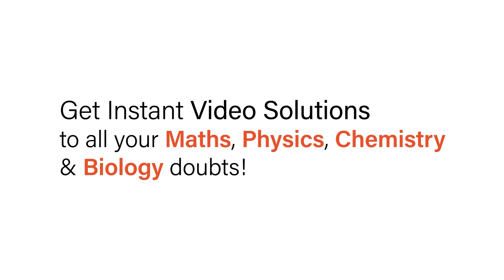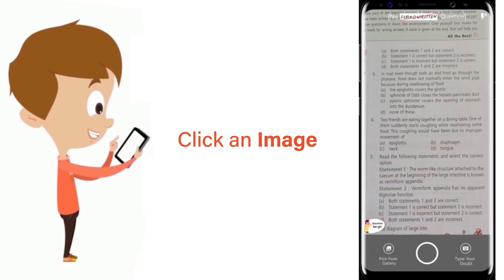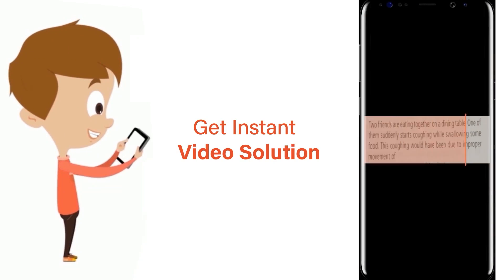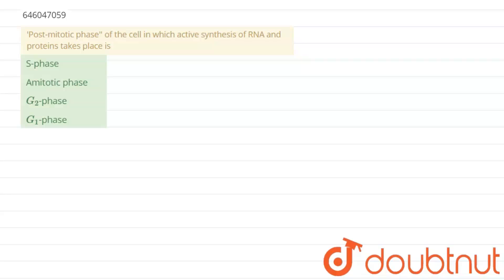With Doubtnet, get instant video solutions to all your math, physics, chemistry, and biology doubts. Just click the image of the question, crop the question, and get instant video solution. The question is: post-mitotic phase of the cell in which active synthesis of RNA and proteins take place is...